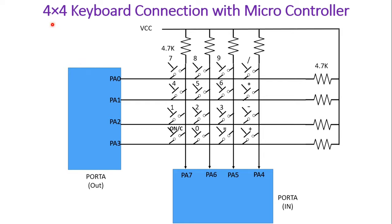Let us briefly revisit the 4x4 keyboard connection with microcontroller that we discussed in the previous video. There are 4 rows: PA0, PA1, PA2, PA3 will be defined as output ports. And PA4, PA5, PA6, PA7 — these 4 pins will be defined as input pins.